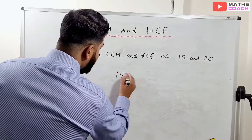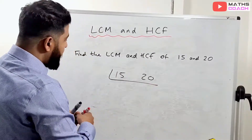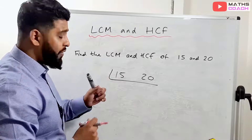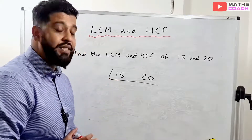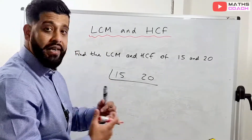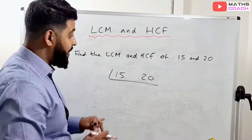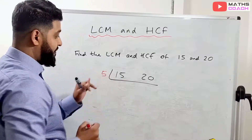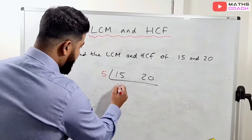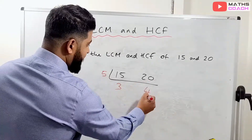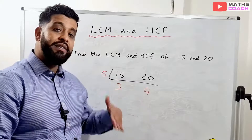Write 15 and 20, and put a dividing line next to them. We divide by prime numbers. The smallest prime is 2, but 2 doesn't divide into 15, so we try 3 — but 3 doesn't go into 20 either. So we try 5: 5 goes into both. 15 divided by 5 is 3, and 20 divided by 5 is 4. Now one of those results is a prime number, so we stop dividing.